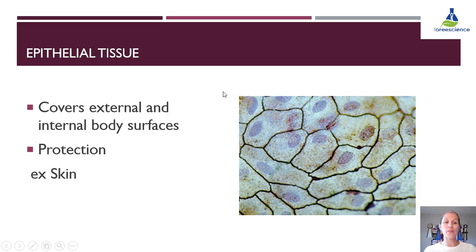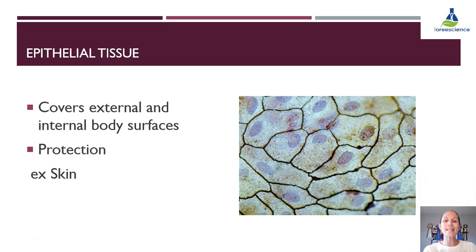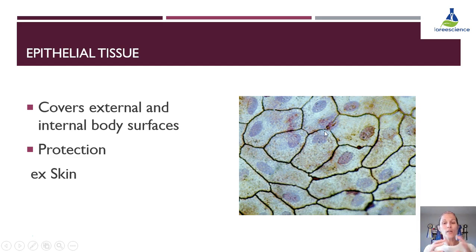The next type of tissue is epithelial tissue. Epithelial tissue's job is to cover external and internal body surfaces. Externally it would be the skin on your hands protecting you from the outside, or internally it covers all of your different organs — your lungs, your heart — and its job is protection. The main example would be our skin. If we look at the cells in that tissue, they're kind of randomly shaped, oval, relatively flat, and really tight together, because their job is to protect — you don't want spaces in between that things could get through and harm us.